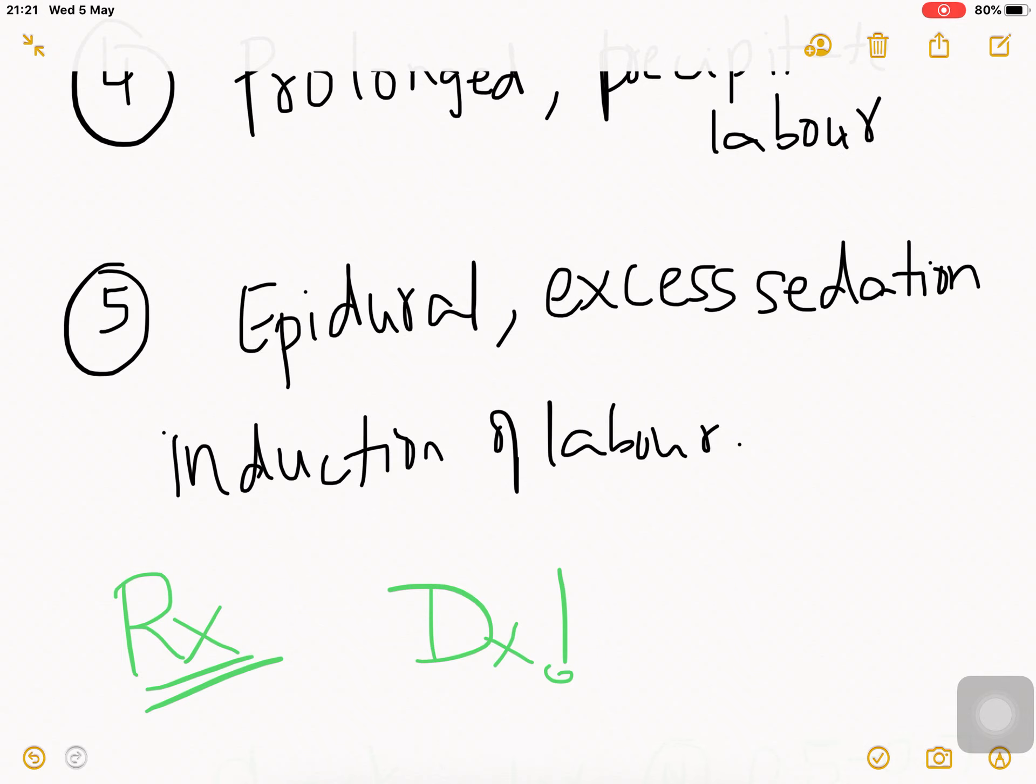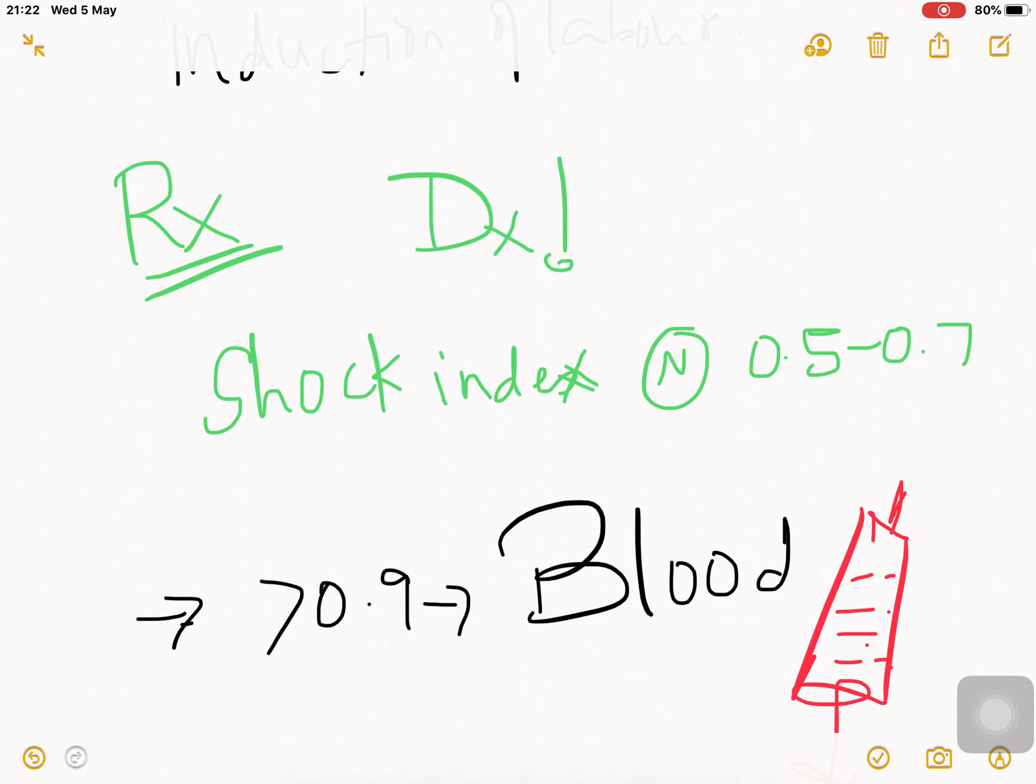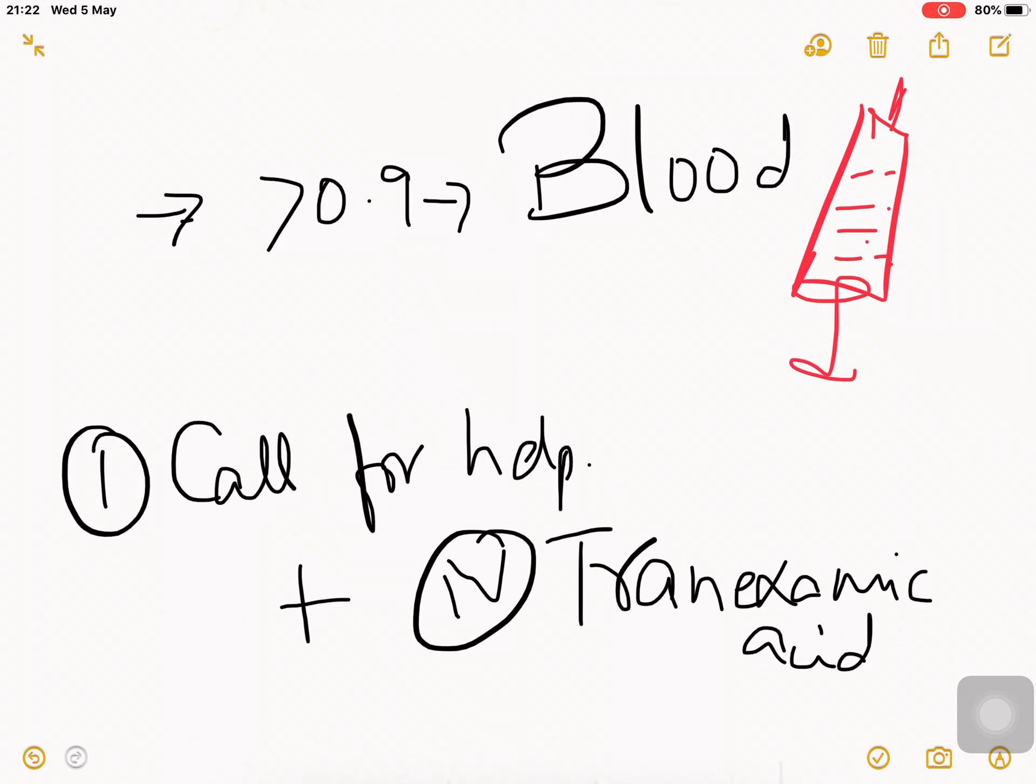PPH is a deadly disease. Diagnosis is based on shock index - calculate it using a calculator. The shock index is 0.5 to 0.7 in a normal person, but if it's more than 0.9, it's an absolute indication for blood transfusion. First, call for help because a single doctor will not be sufficient. Second, immediately give an antifibrinolytic agent which is IV tranexamic acid. Trapic is a very good drug used in AUB and PPH.